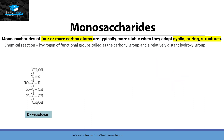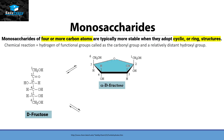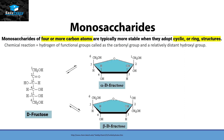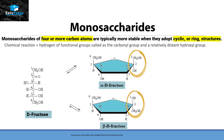Similarly, the D-fructose molecule can also become a cyclic structure, converting into alpha-D-fructose and beta-D-fructose. The only difference is the orientation of the hydroxyl group on carbon number two with respect to the hydroxyl group on carbon number one.